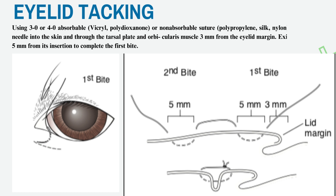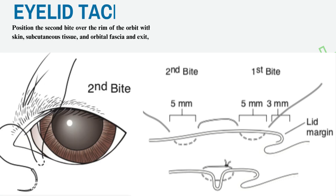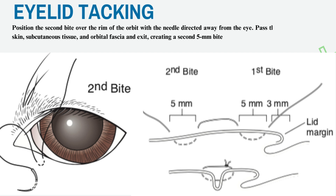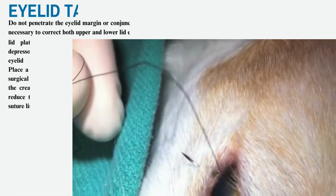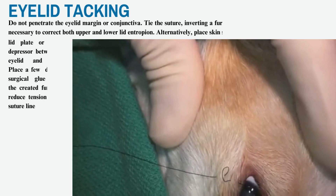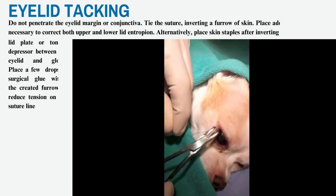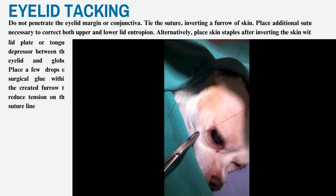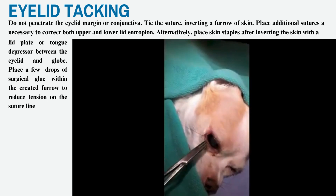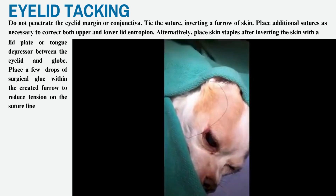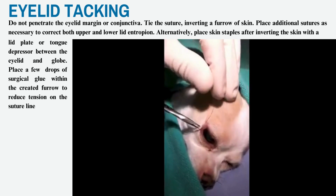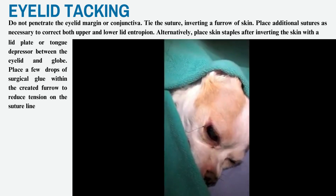Insert the needle into the skin and through the tarsal plate and orbicularis muscle 3 mm from the eyelid margin. Exit the needle 5 mm from its insertion to complete the first bite. Position the second bite over the rim of the orbit with the needle directed away from the eye. Pass the needle through the skin, subcutaneous tissue, and orbital fascia and exit, creating a second 5 mm bite. Do not penetrate the eyelid margin or conjunctiva. Tie the suture, inverting a furrow of skin. Place additional sutures as necessary to correct both upper and lower lid entropion. Alternatively, place skin staples after inverting the skin with a lid plate or tongue depressor between the eyelid and globe. Place a few drops of surgical glue within the created furrow to reduce tension on the suture line.